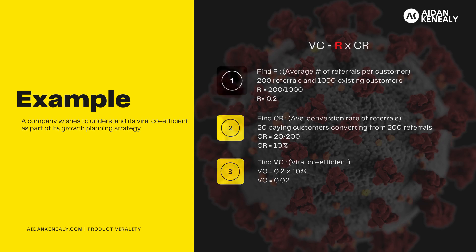The first thing they must do is find R, the average number of referrals per customer. They do this by dividing the total number of referrals by the total number of current customers. So let's say this company has 200 referrals and 1,000 existing customers. This would make R equal to 200 divided by 1,000, or 0.2.